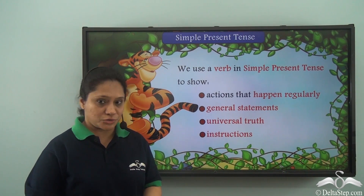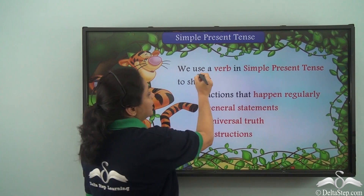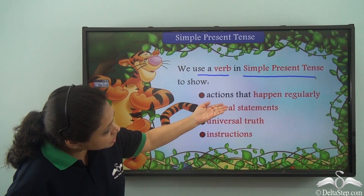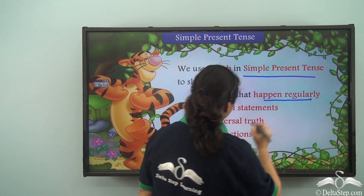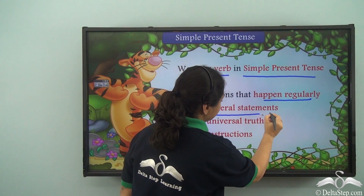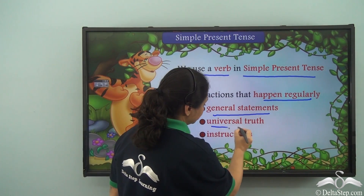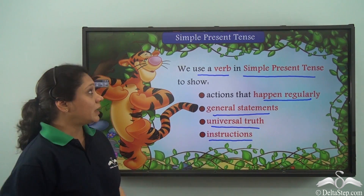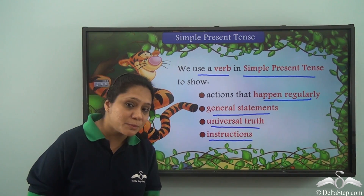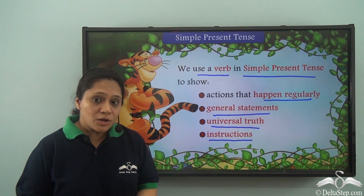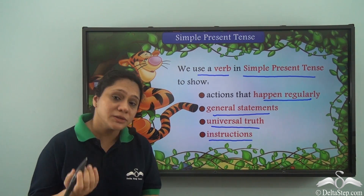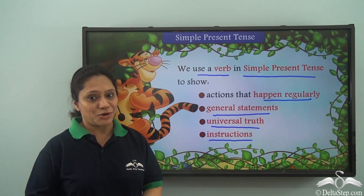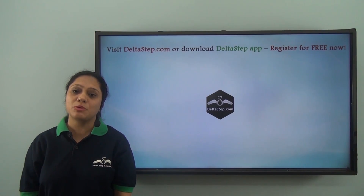So what have we learnt today? We have learnt that we use a verb in the simple present tense to show actions that happen regularly, general statements, universal truth, as well as instructions. Now that you know what the simple present tense is, whenever you are reading books or talking to your friends, try to understand whether it is in the simple present tense or not. Don't forget to subscribe to our channel.